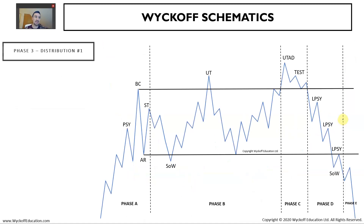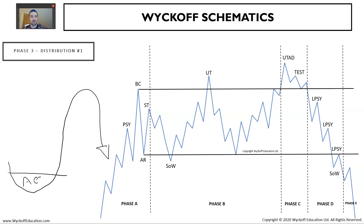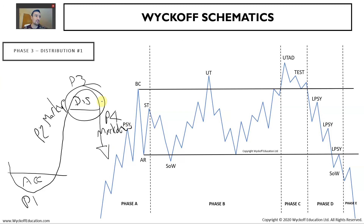Now we've got our distribution schematics. Remember the Wyckoff price cycle: accumulation, markup, distribution, markdown. These are fractal structures by their nature - they don't look exactly alike, but they share many repeatable common characteristics, which is what we study with the Wyckoff method. It's that contextual framework where you apply the three laws of supply and demand, cause and effect, and effort versus result, along with structural phase analysis using these schematics and learning the labeling.